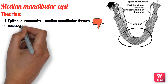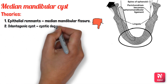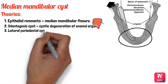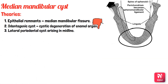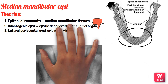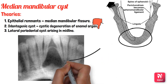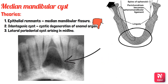Other authors suggest it is an odontogenic cyst formed due to cystic degeneration of the enamel organ of a supernumerary tooth, or a lateral periodontal cyst arising in the midline. Clinically, it is basically asymptomatic and found only on routine radiographic examination. Radiographically, it appears as a unilocular, well-defined radiolucency between the two central incisors.